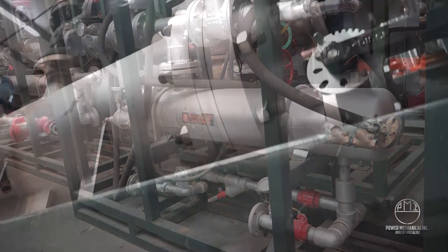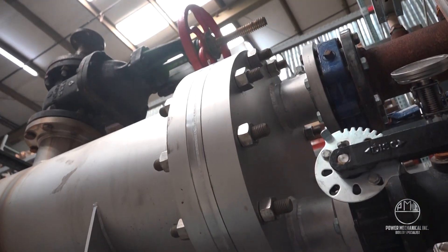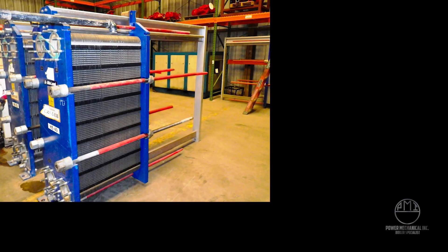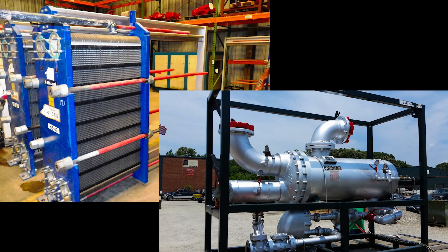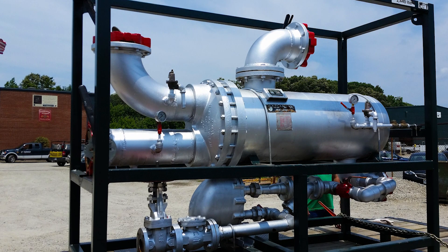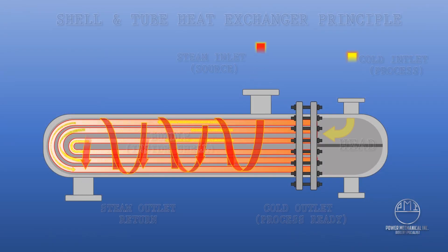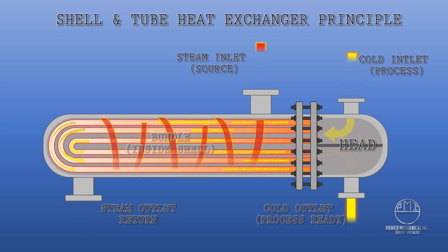Some of the commonly used types with steam are plate heat exchangers and shell and tube heat exchangers. The shell and tube exchanger, with a relatively simple design, offers the most versatility for heat transfer. Process mediums requiring higher temperatures flow through the head assembly and into the bundle.